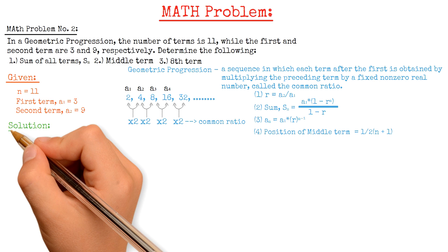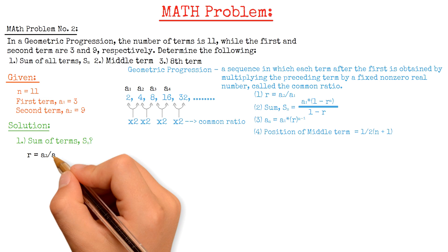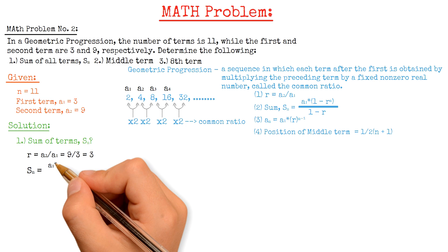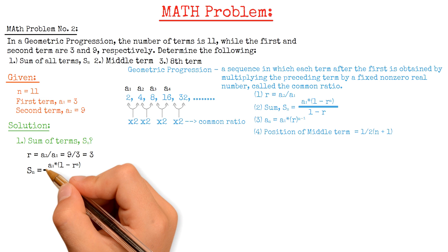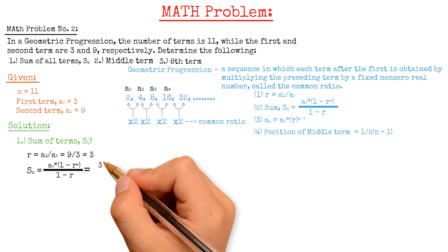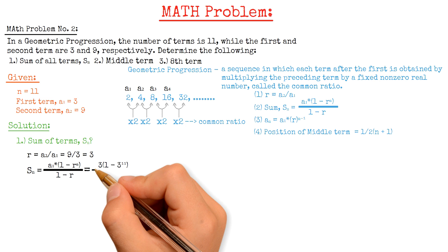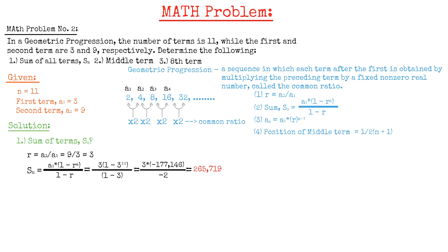Now solving the first question, we will calculate first for the common ratio R: that is 9 divided by 3, and the result is 3. Then we will use the formula — sum of all terms Sn equals the first term A1 multiplied by 1 minus the common ratio R raised to the power of the number of terms N, divided by 1 minus the common ratio R. We have 3 multiplied by 1 minus 3 raised to the power of 11, divided by 1 minus 3, and this gives us a value of 265,719.